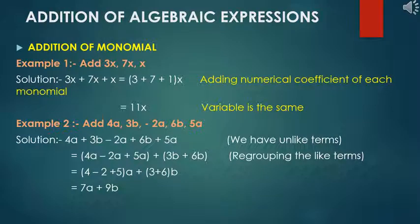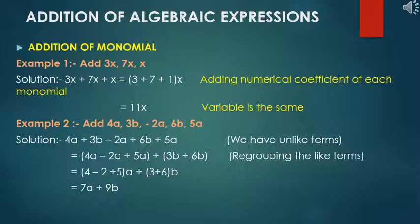Now the next topic is addition of algebraic expressions. First we learn about the addition of monomials. Example 1: Add 3x plus 7x plus x. Solution: the variables are the same, so we add the coefficients. We write (3 plus 7 plus 1)x, which equals 11x. The variable remains the same.